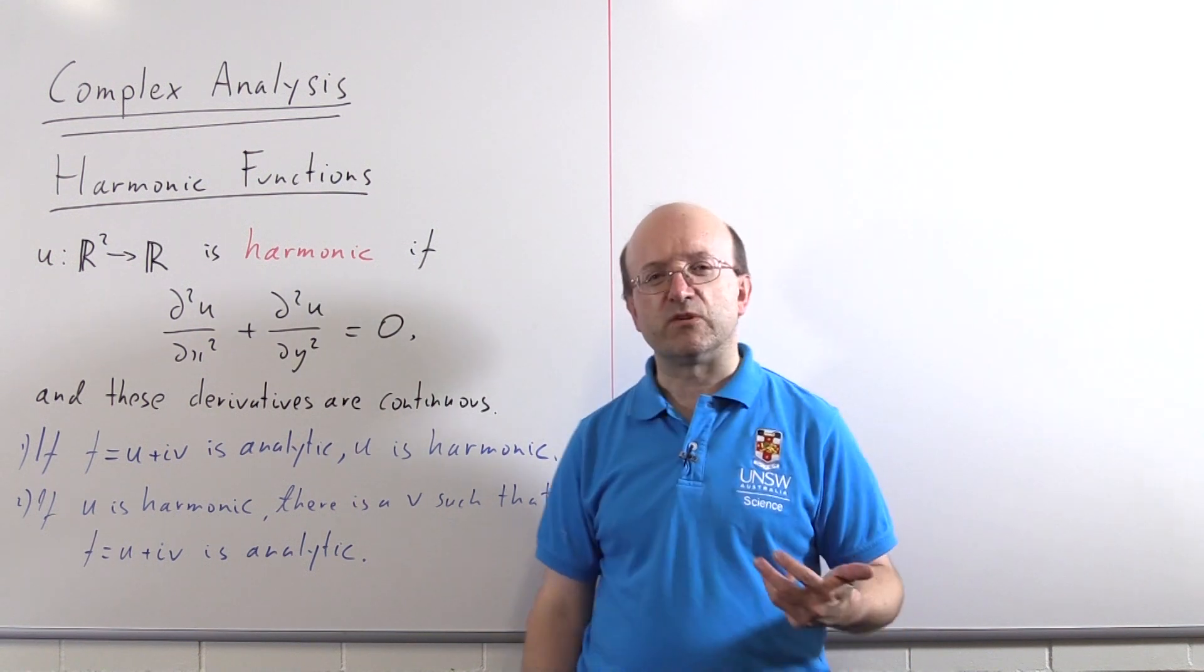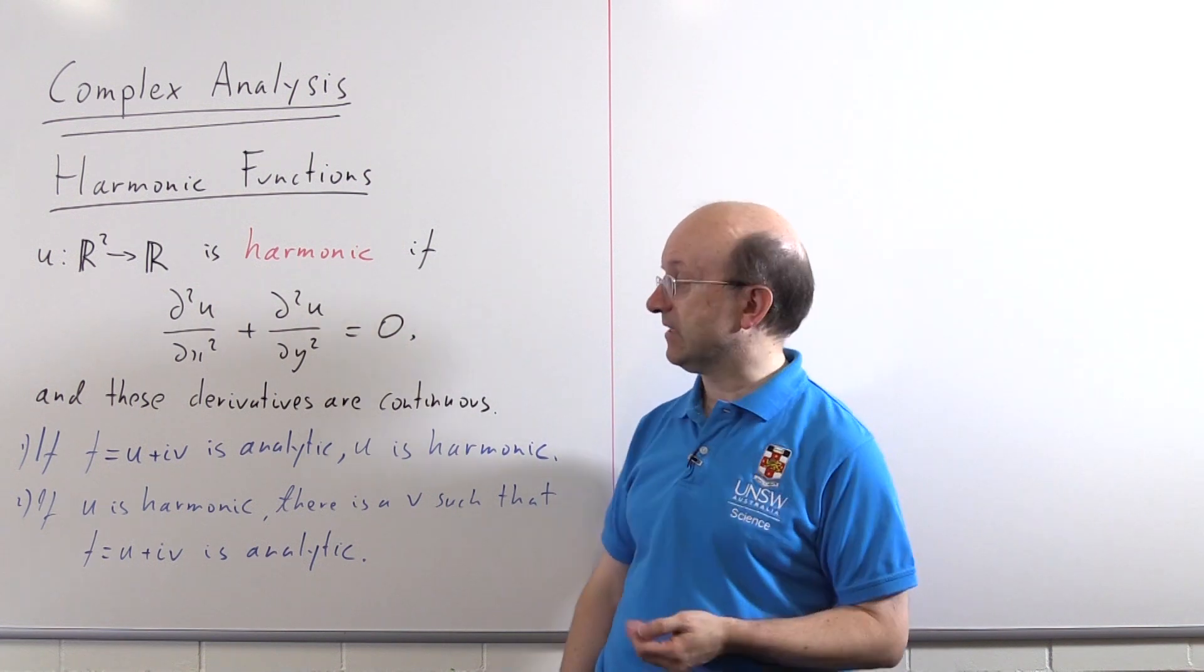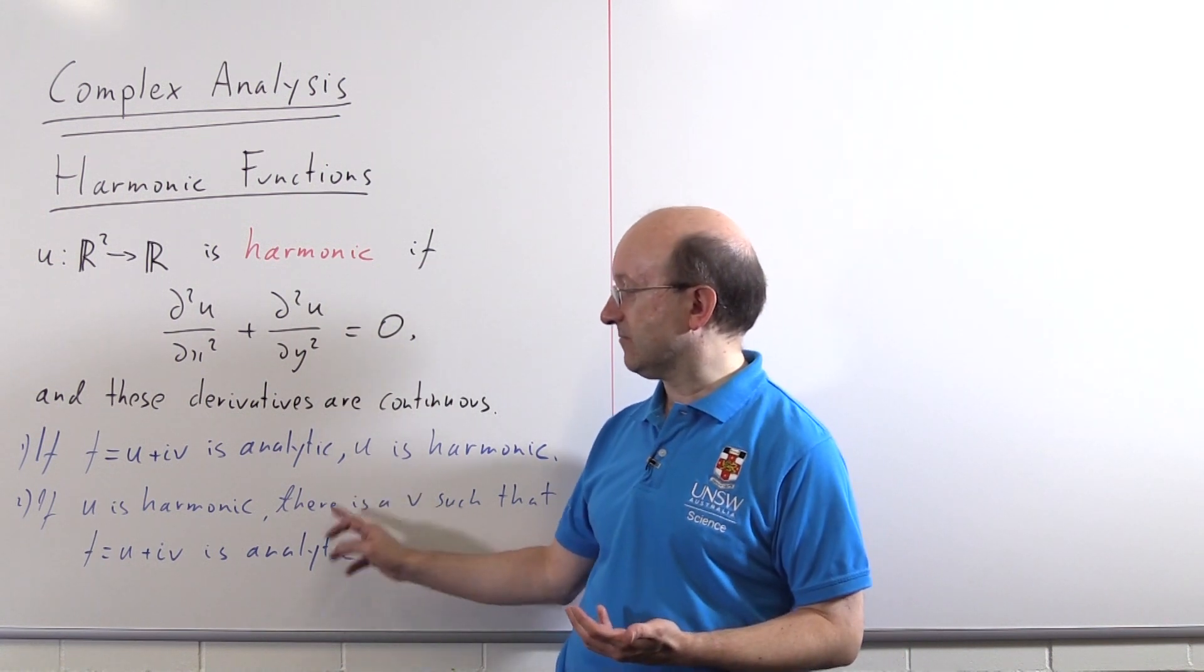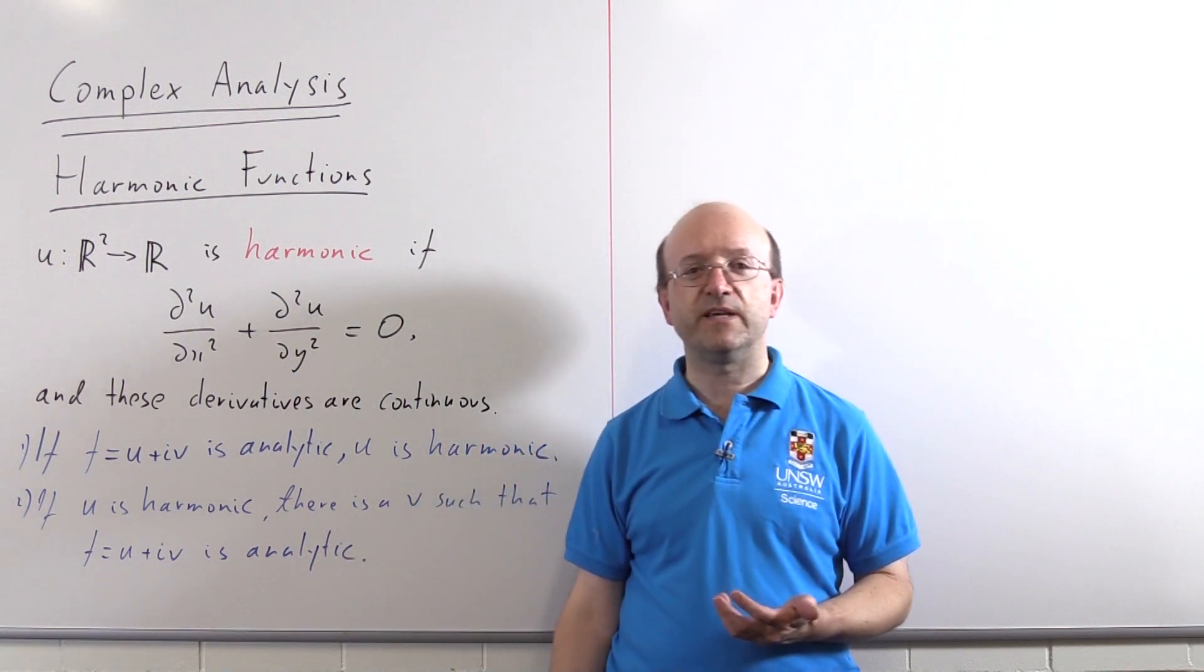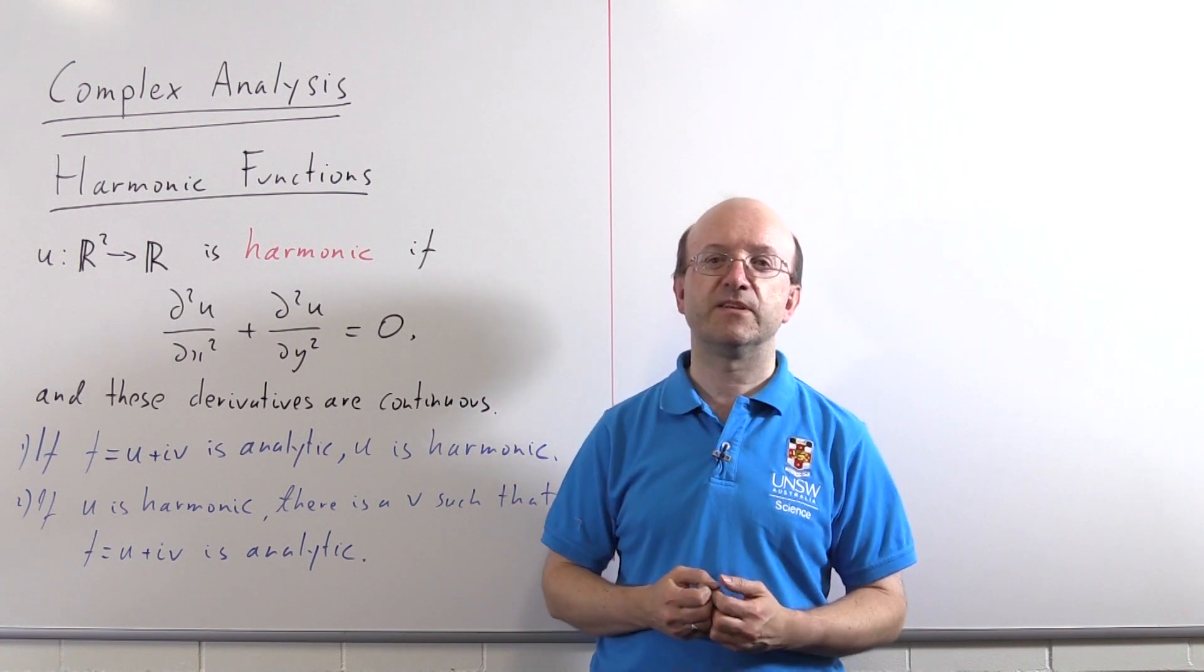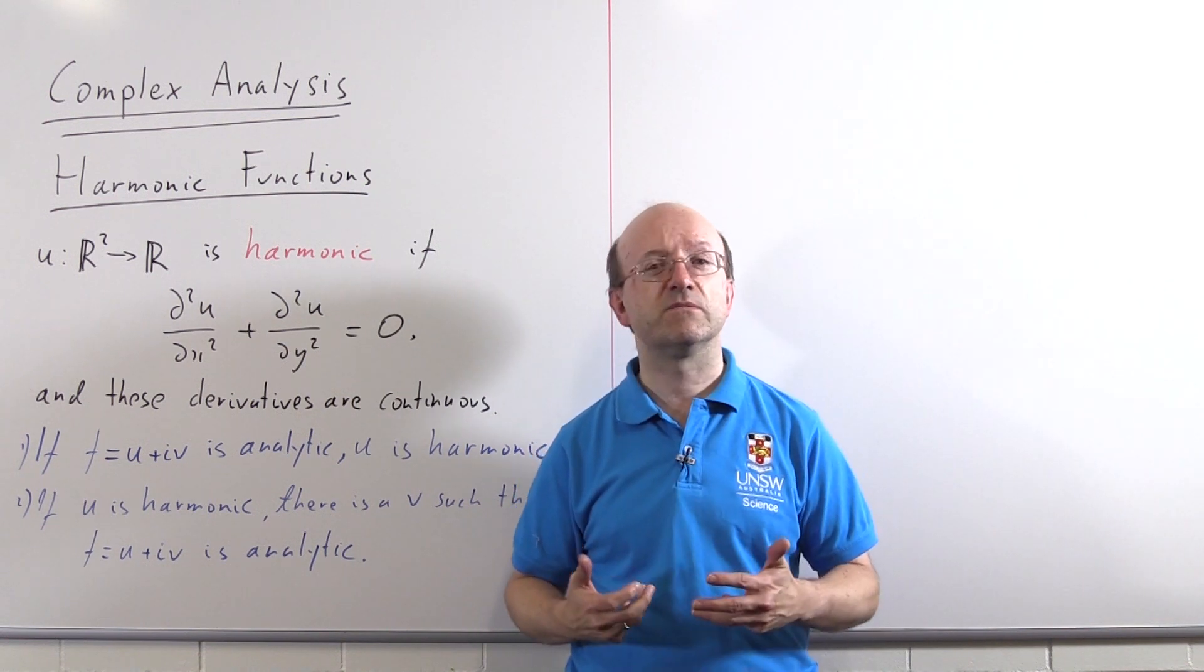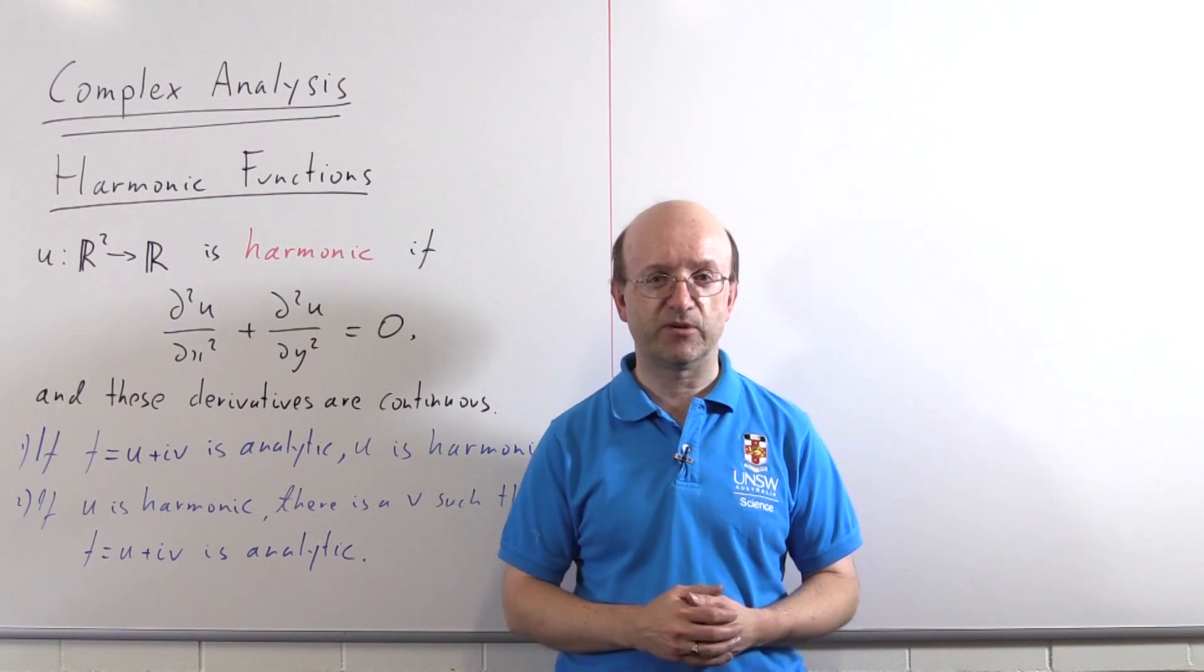What you normally look for in these sorts of problems when you ask them in a test or exam is you're given a u and asked to either prove it's harmonic or not, and then to find a harmonic conjugate v and then perhaps write u + iv as a function of z. So u and v are given in terms of x's and y's, and we want to combine everything together so everything is just in terms of z. So what we're going to look at in the second half of the video is how we do that.